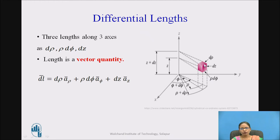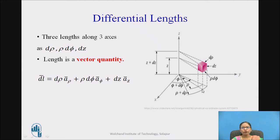The vertical length is dz. The length in the radial direction is d rho. For phi: when I move in the phi direction by d phi, I need to get the actual arc length. Since d phi is a small angle, I multiply it by the radius rho to get the arc length rho d phi. Therefore, d phi alone is not a length — rho d phi is the length. So the differential length vector is: dl⃗ = d rho â_rho + rho d phi â_phi + dz â_z.